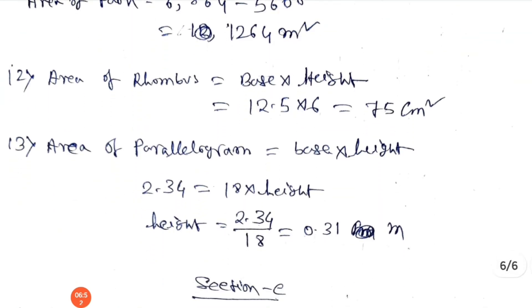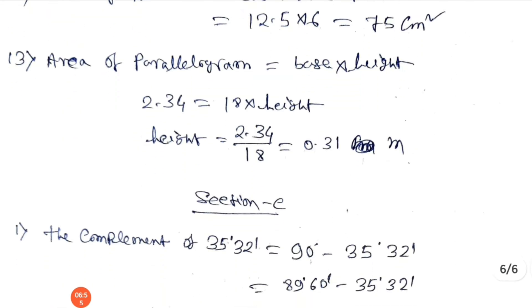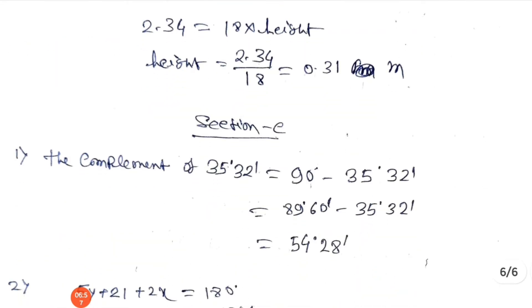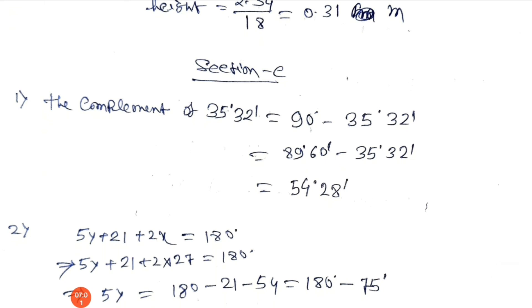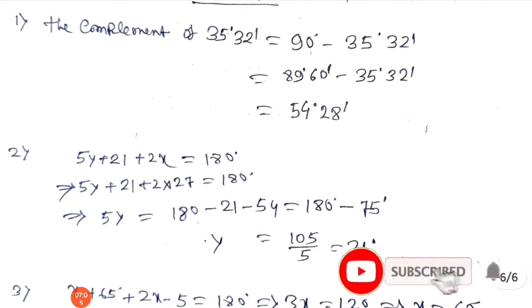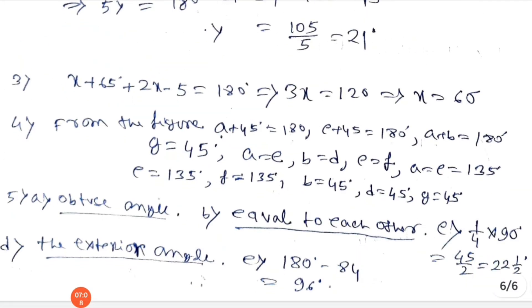Question 12 answer: 75 square centimeters. Question 13 answer: 0.31 meters. Section C answers: the complementary angle is 54 degrees 28 minutes. The next answer: obtuse angle. The exterior angle answer: 180 minus 84 equals 96 degrees.